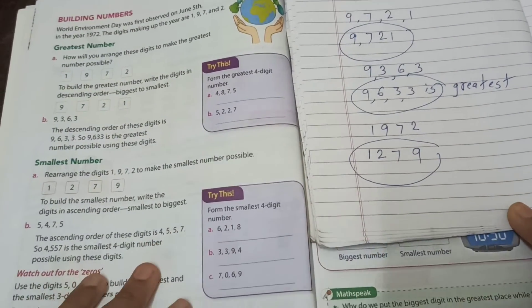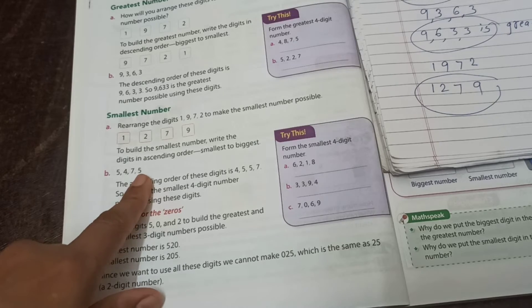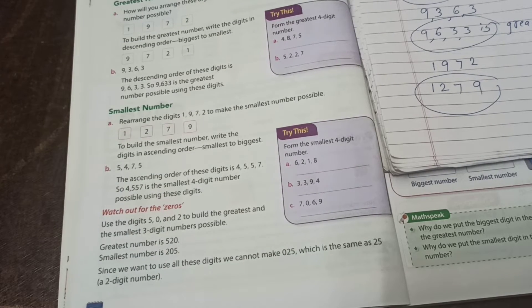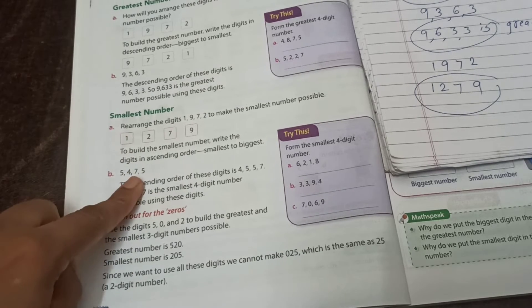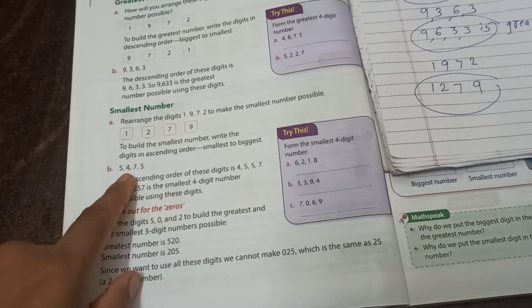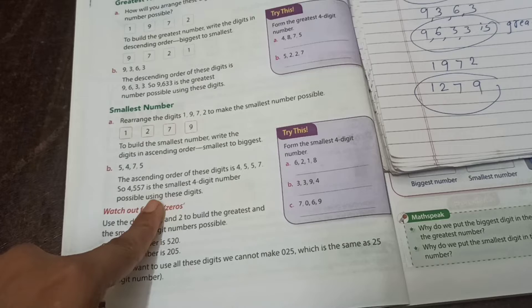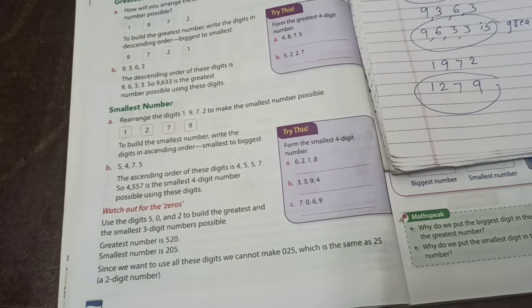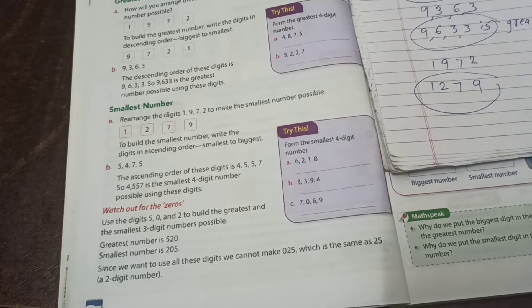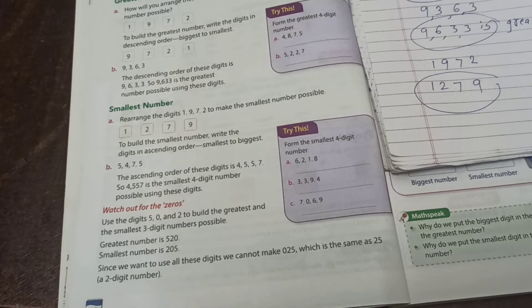Then another one example our textbook given here. See, B number 5, 4, 7, 5. How we arrange? Then we got a smallest number. Ascending order. Which one a smallest? 4. Then write down first 4. Then 5, 5. Double 5. And then 7. Means 4557 is the smallest four digit number we got. Means any number we arrange and then we got greatest number or smallest number.